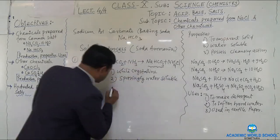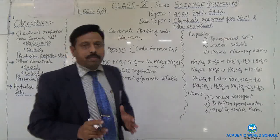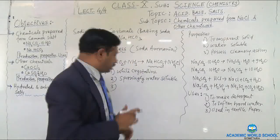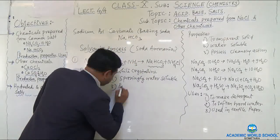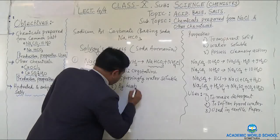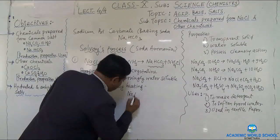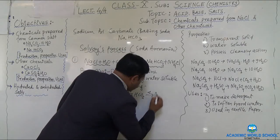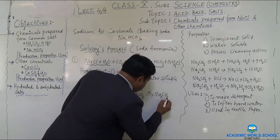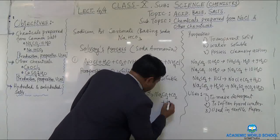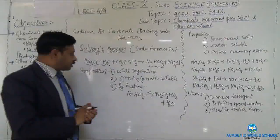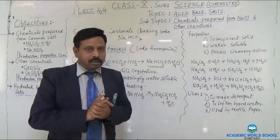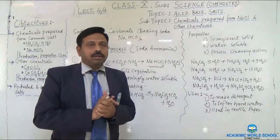When sodium bicarbonate is heated, it gives sodium carbonate, carbon dioxide, and water. The equation: NaHCO₃ → Na₂CO₃ + CO₂ + H₂O. These are the properties of sodium bicarbonate, which is known as baking soda.